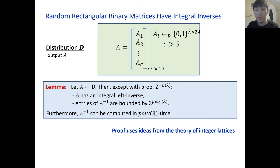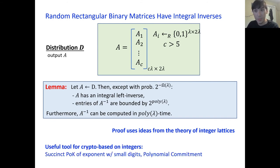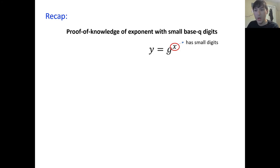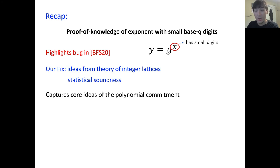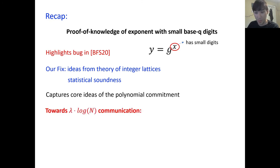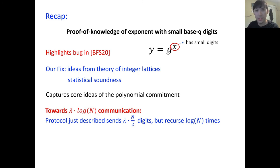To recap: we gave a proof of knowledge of exponent with small digits in base Q. We highlighted a buggy protocol and described our fix, which uses ideas from the theory of integer lattices and random subset products. As a result, we obtain a protocol which is statistically sound. This proof of knowledge protocol captures the main technical ideas of our polynomial commitment scheme, and can be modified to the full version of our streamable polynomial commitment scheme with some tweaks. Furthermore, if we want logarithmic communication, we can just recurse log n times on this lambda-to-2-lambda protocol.